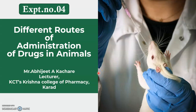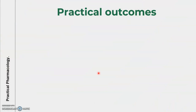As you know, dear students, in experiment number 2 we already discussed the different animals used for experimental purposes. And in experiment number 3, we already discussed the different equipment used for experimental pharmacology. Apart from those two, this is a new concept. Through this experiment, we can discuss and prepare a report on the different routes via which we can administer the dose to animals.